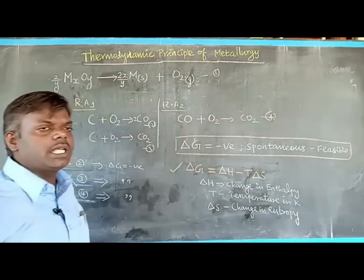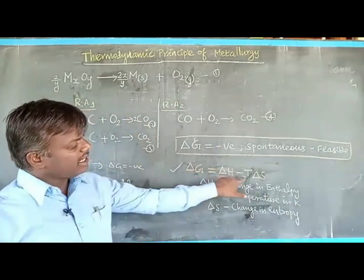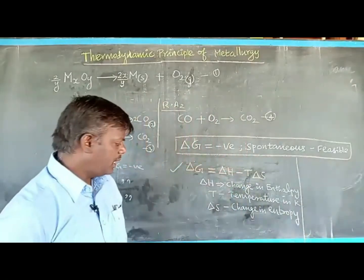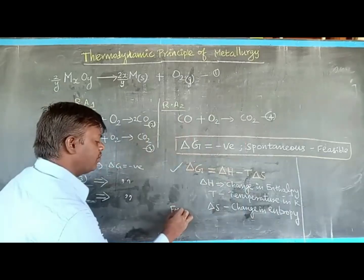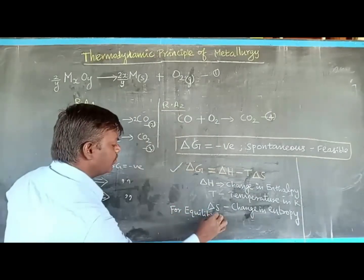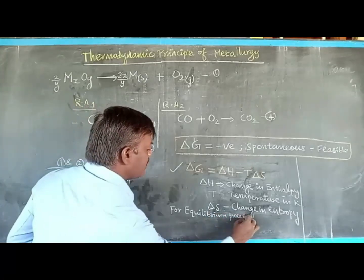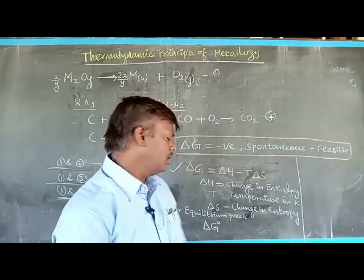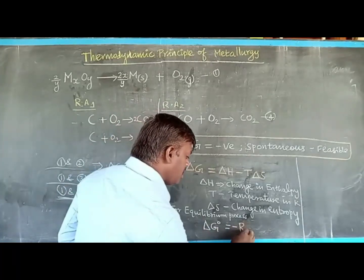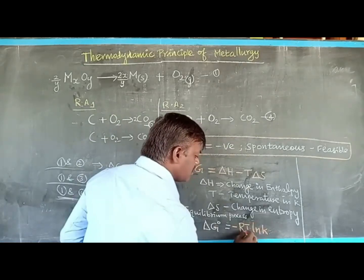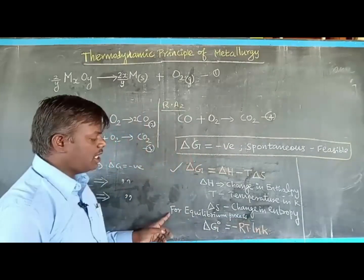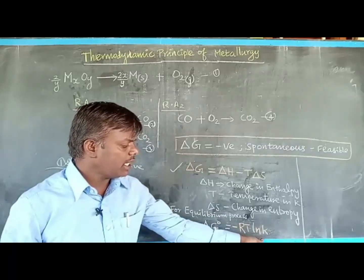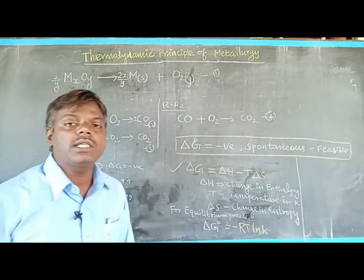This is the Gibbs free energy equation: ΔG = ΔH − TΔS. For an equilibrium process, the standard change in Gibbs free energy is given by ΔG⁰ = −RT ln K.